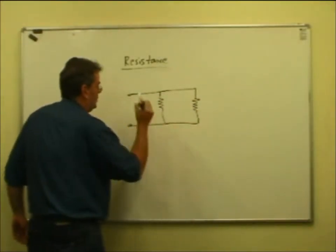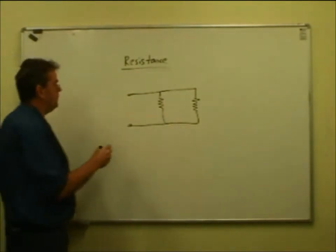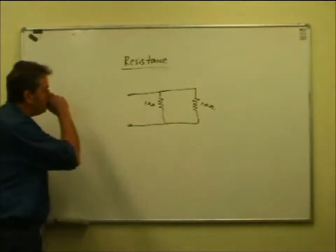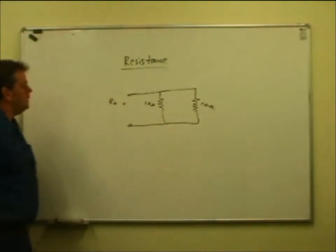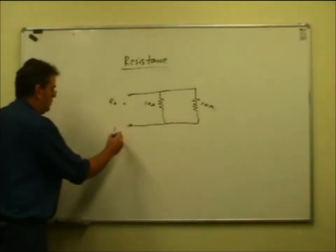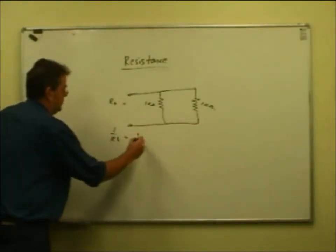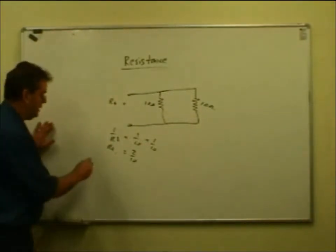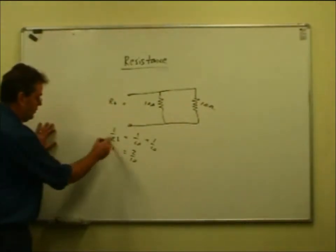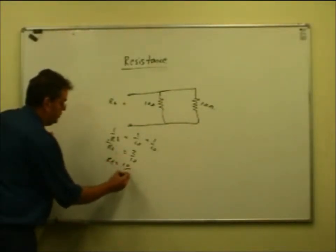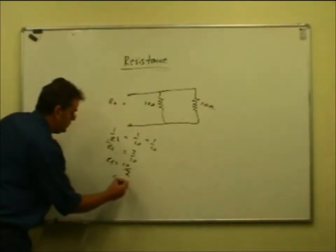If you've got two resistors in parallel, say they're both 10 ohm resistors. 1 over R-total equals 1 over 10 plus 1 over 10, which is equal to 2 tenths. So we flip it up the other way to get 1 over our total equals 2 over 10. Our total - we call it 10 over 2, flip it back the other way - which is 5.